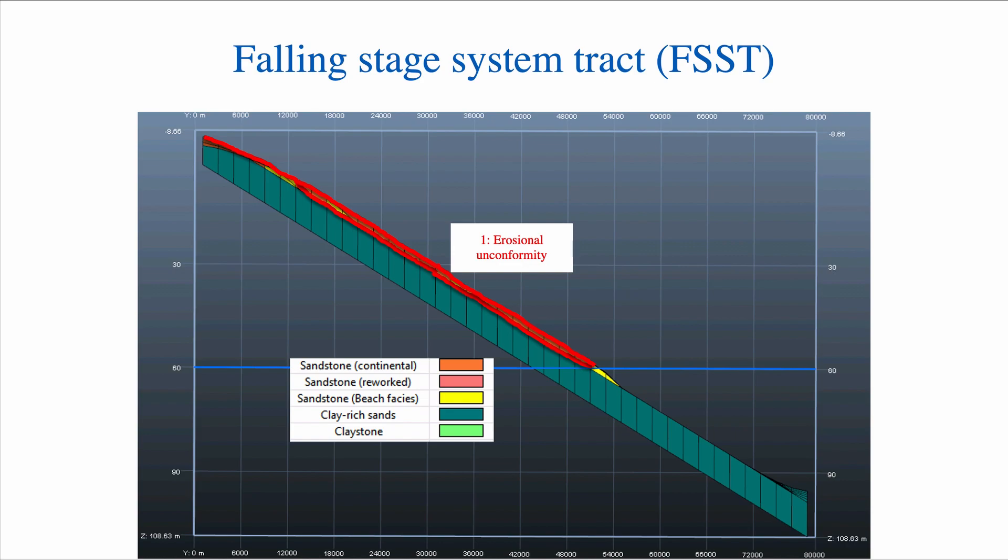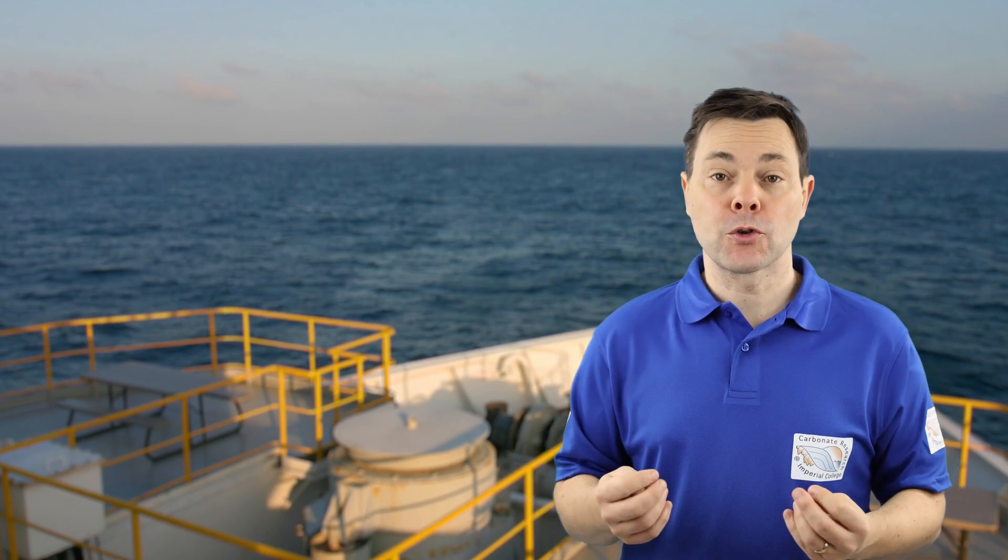Because the FSST is exposed during the subsequent sea level fall, the falling stage system tract is characterized by a lot of erosion. And because there is a lot of erosion in the FSST, it also implies that its potential for being preserved is low. So it's not always present in the rock record.